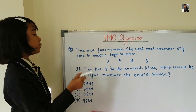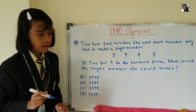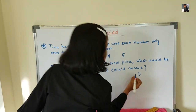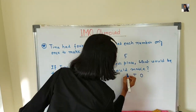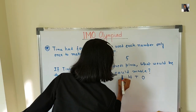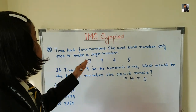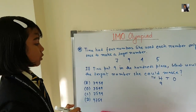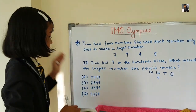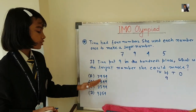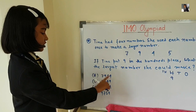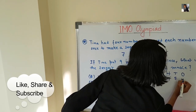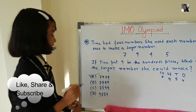If Tina puts nine in the hundreds place, what would be the largest number she could make? First comes ones, then comes tens, then comes hundreds, then comes thousands. So nine should be in the hundreds place. When nine is in the hundreds place, you can see only nine is in the hundreds place in option seven-nine-five-four. So that number is the answer.